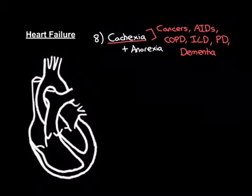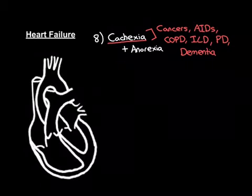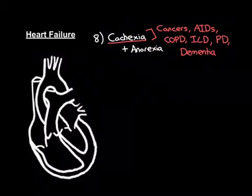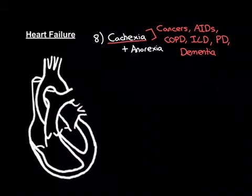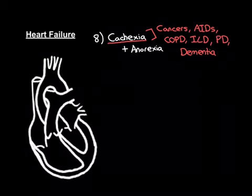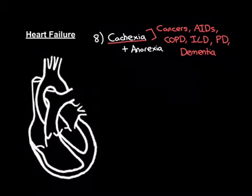Cancers are incredibly metabolically active — they use up a huge amount of nutrients, so they can gradually cause people to waste away. Eventually people can end up in a drowsy state because the brain doesn't have enough nutrients left to work properly, and when they're in that drowsy state they won't eat and drink, so everything gets worse. AIDS — the result of HIV infection causing horrific immunosuppression — can kill through infection, but another way is through gradual wasting away, losing all muscle due to the metabolic activity needed to sustain the virus.